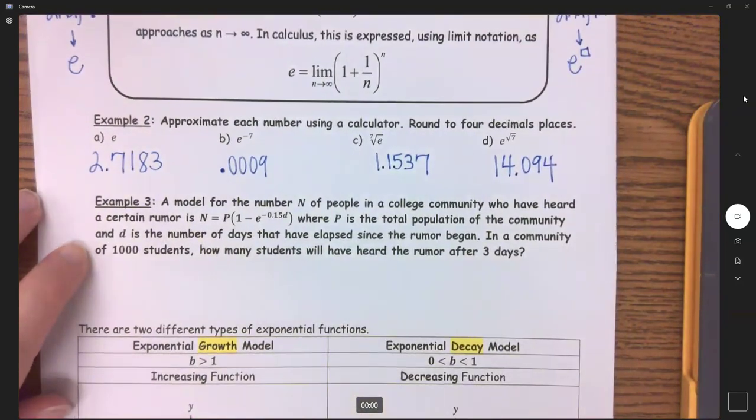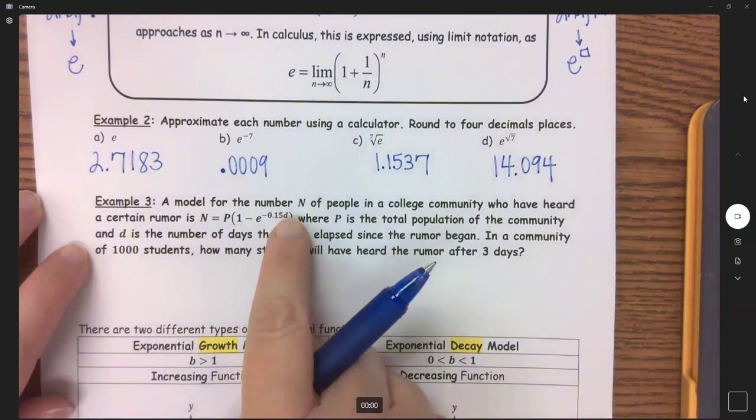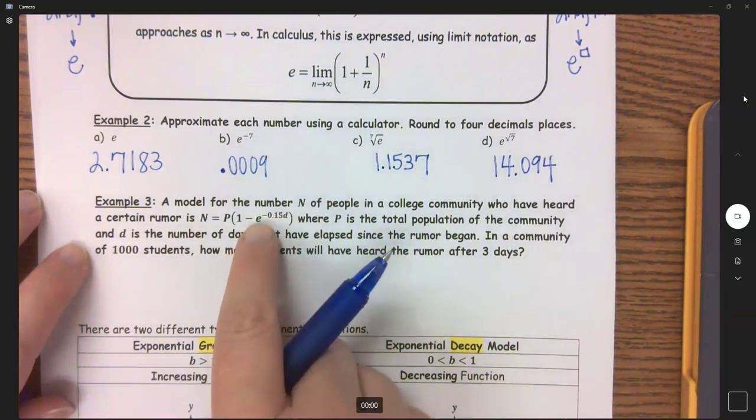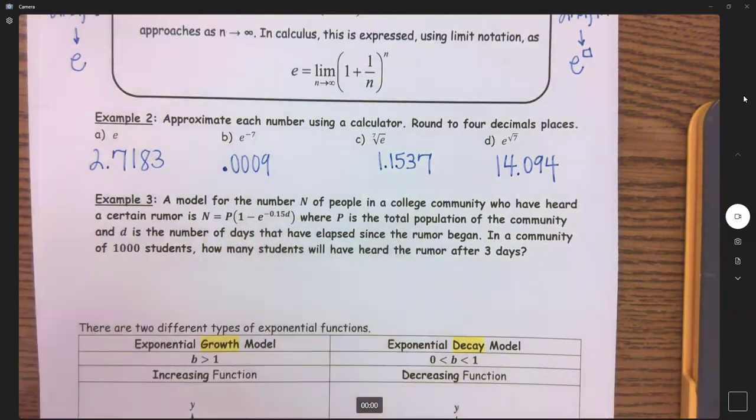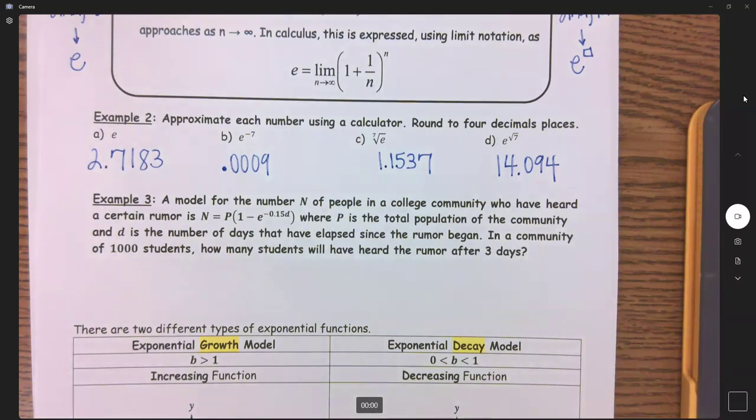Now, for example three here, we have a model, an exponential, because I have that variable in the exponent position, an exponential with that base of e, which is super common. So a model for the number n of people in a college community who have heard a certain rumor is n equals, where p is the total population of the community, and d is the number of days that have elapsed since the rumor began. In a community of 1,000 students, how many students have heard the rumor after three days?